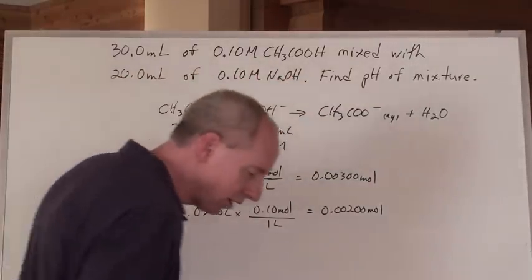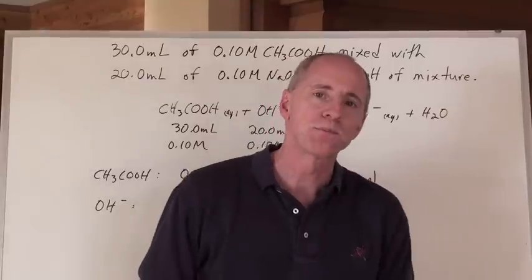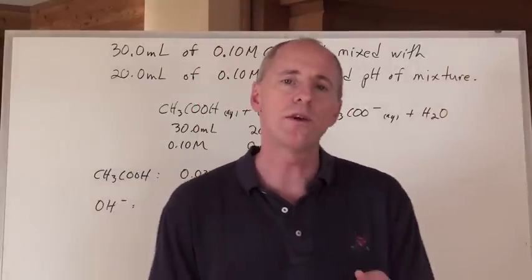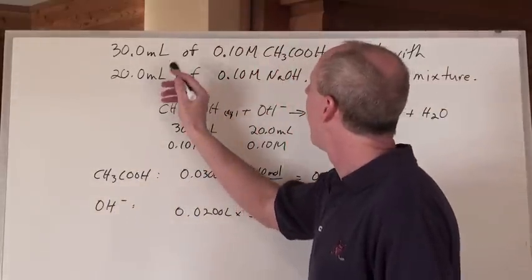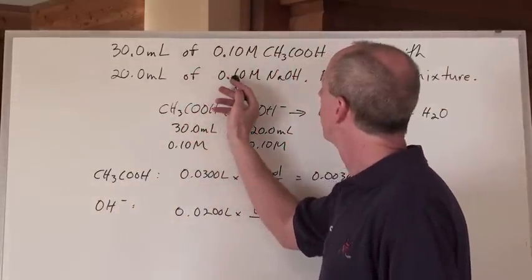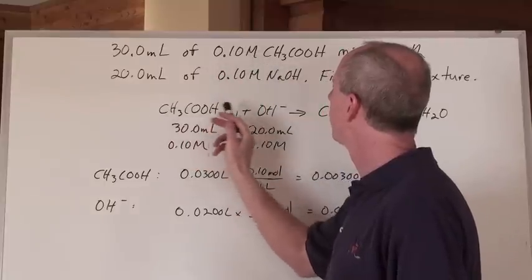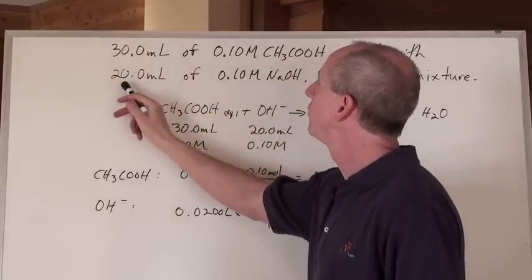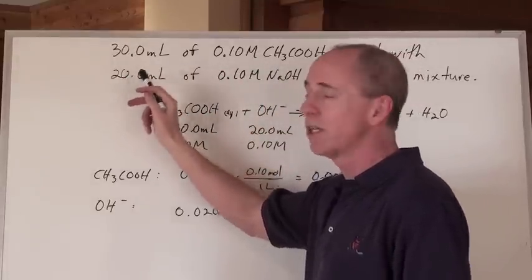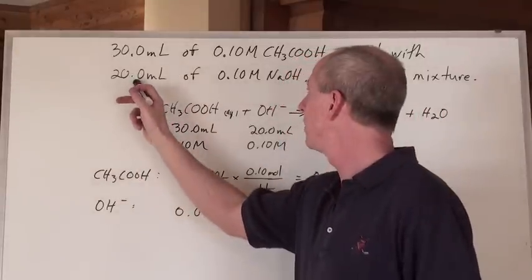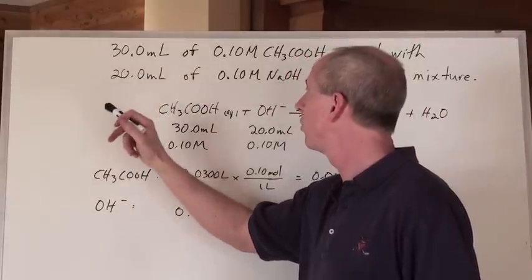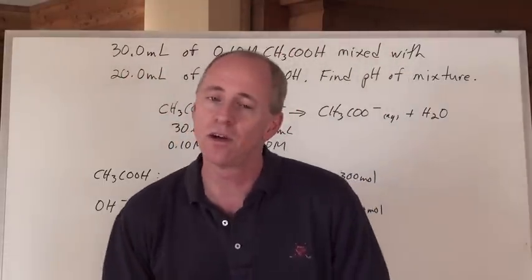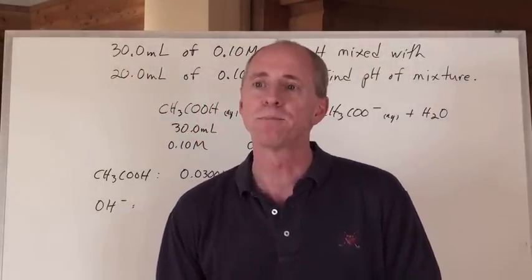Now when you are looking at that, you're saying to yourself: alright, you're mixing a weak acid with a base. And here's the deal — since the concentrations are equal and these are going to react in a one-to-one ratio, I know that 30 milliliters of acid is not going to be completely neutralized by 20 milliliters of base. I'm going to have excess CH₃COOH left in the end.